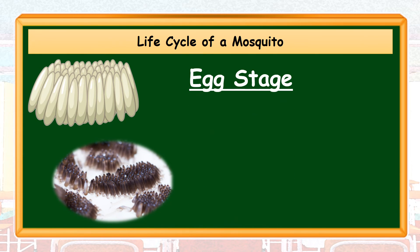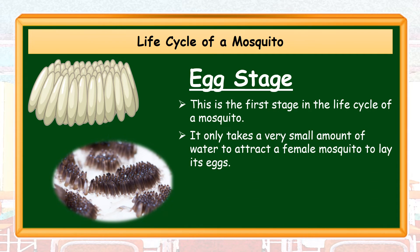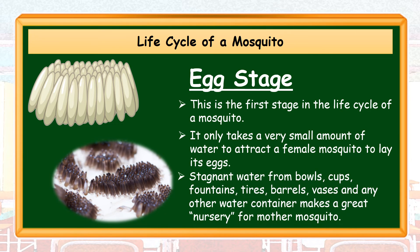Egg stage. This is the first stage in the life cycle of a mosquito. It only takes a very small amount of water to attract a female mosquito to lay its eggs. Stagnant water from bowls, cups, fountains, tires, barrels, vases, and any other water container makes a great nursery for the mother mosquito.